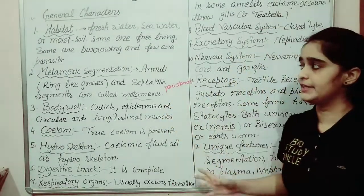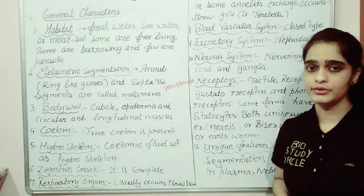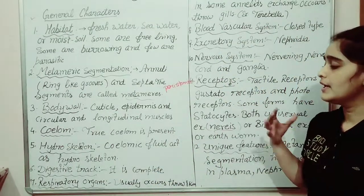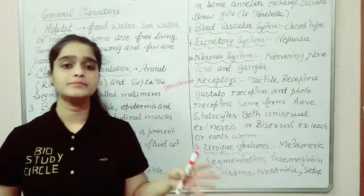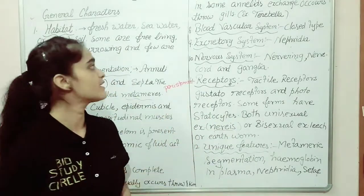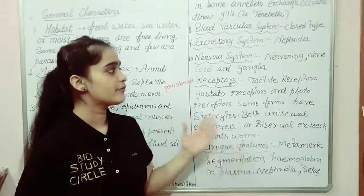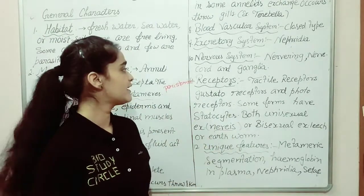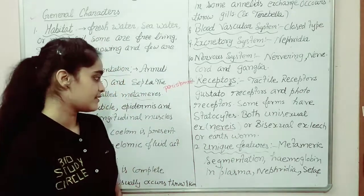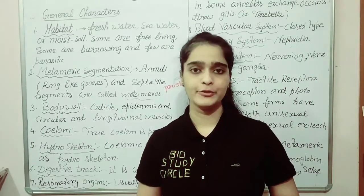To recap: we discussed the habitat, segmentation — segments present in these animals, which is why they are called segmented animals — body wall, true coelom, complete digestive tract, respiratory organs mostly skin-based with gills in Terebella, closed blood vascular system, nephridia for excretion, nervous system with nerve rings and ganglia, and receptors. If you like this video, please like it, share it, subscribe, and don't forget to press the bell icon. Thank you.